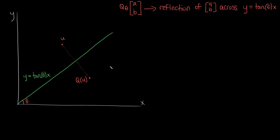We can apply a rotation matrix — I have a video on that from before. What it'll do is rotate all of the points by an angle theta. Specifically, we apply the rotation matrix of negative theta. If you rotate the line y = tan(θ)·x by negative theta, since it makes an angle of theta to the x-axis, that cancels out all of that angle, and you're left with just the x-axis as your new line.